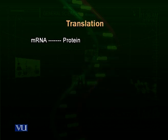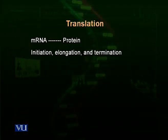Next is translation. Translation is from messenger RNA to protein — the messenger RNA codes itself in the form of a protein. The translation process consists of three steps: initiation, elongation, and termination.